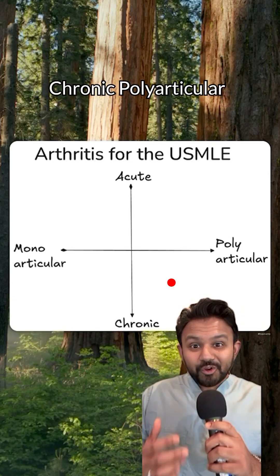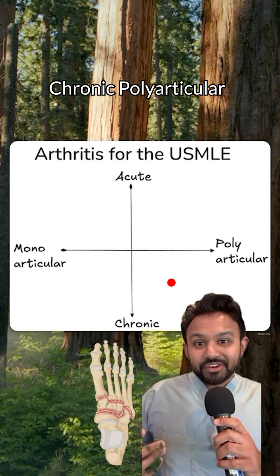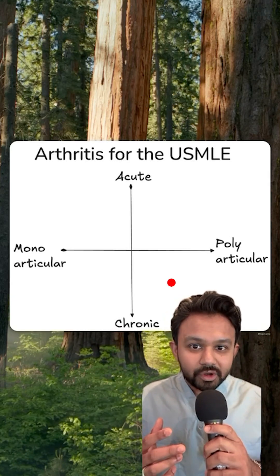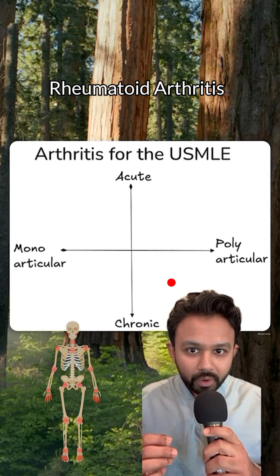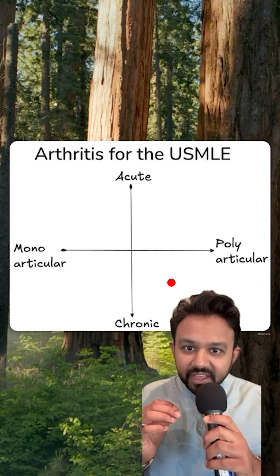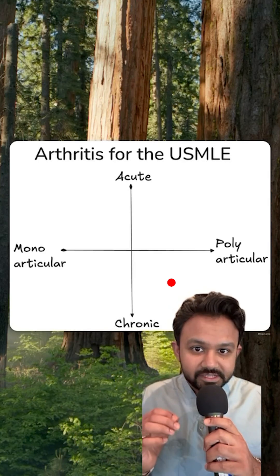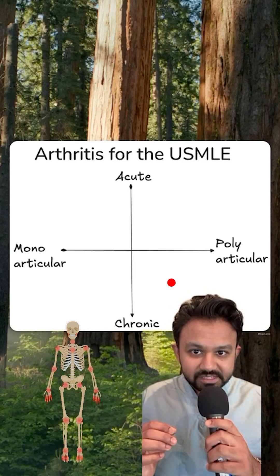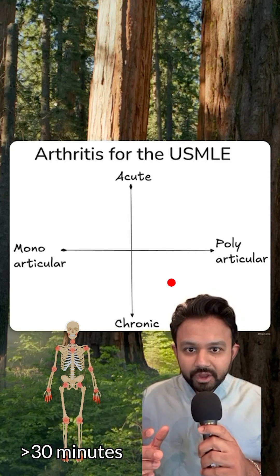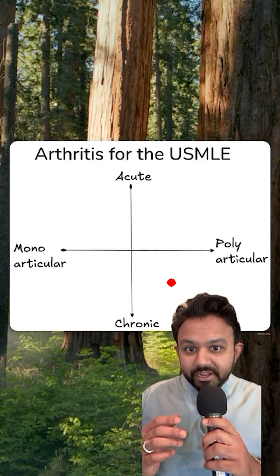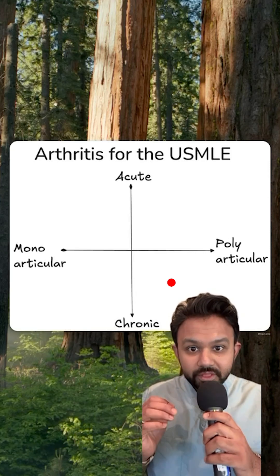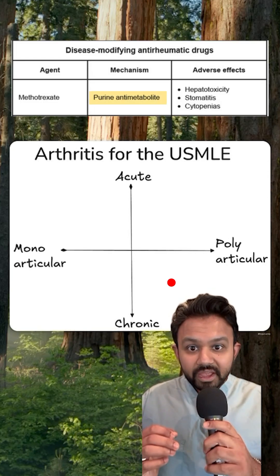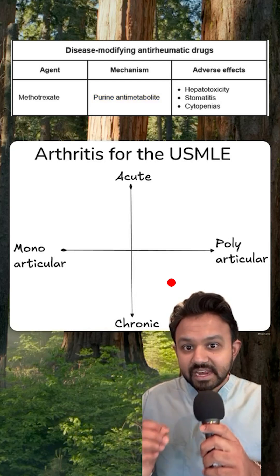Finally, we have chronic polyarticular arthritis. This is going to be classic for the illness script of rheumatoid arthritis. The key in vignettes is going to be prolonged morning stiffness greater than 30 minutes. These patients — typically females — are going to be treated with methotrexate, a dihydrofolate reductase inhibitor.